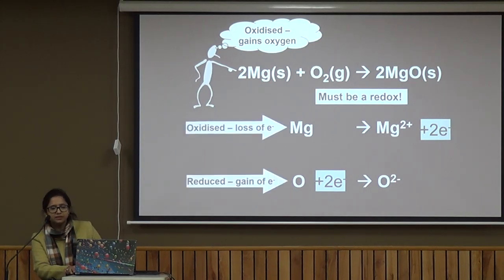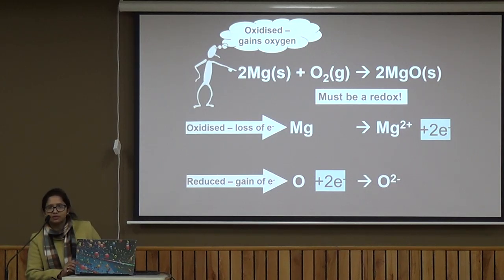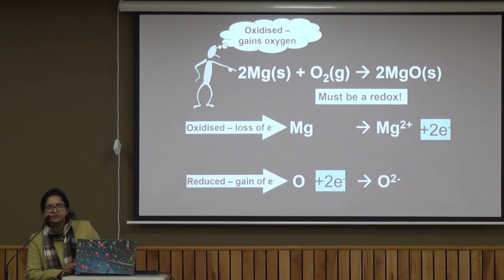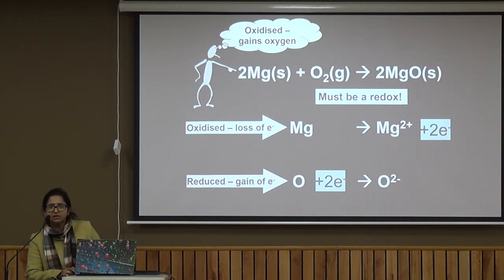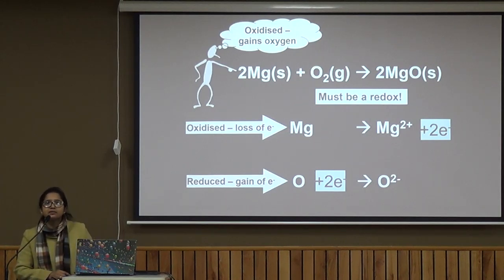You can observe the same in the reaction where copper strip is added to silver nitrate solution. Copper nitrate is formed and silver is deposited. When copper dissolves in silver nitrate solution, its oxidation state goes from 0 to plus 2 — an increase. In silver nitrate, silver has an oxidation state of plus 1, and after converting to elemental silver its oxidation state becomes 0. So there is a decrease in the oxidation number of silver and an increase in the oxidation number of copper.